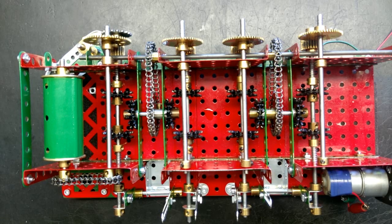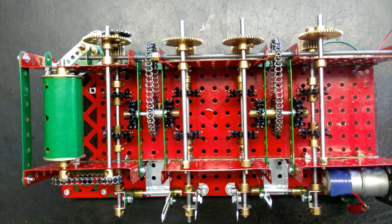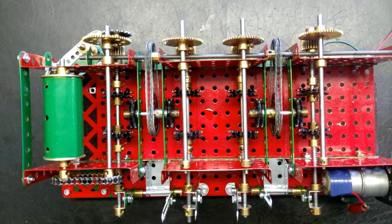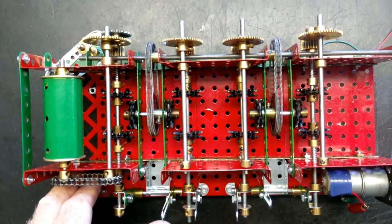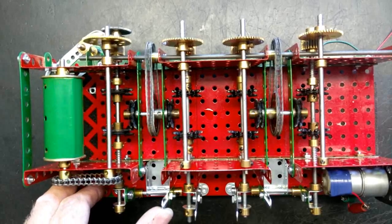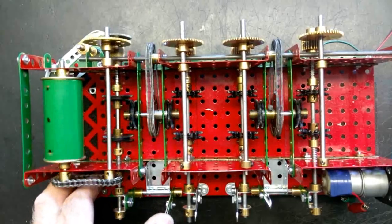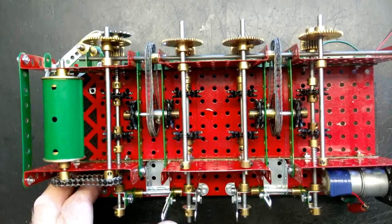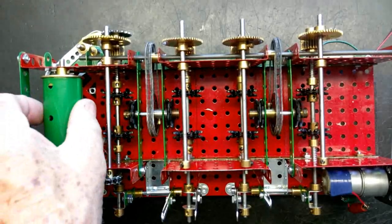Okay this is how it works. This is the first drive which drives the drum forwards and backwards, and in the neutral position the drum is locked.